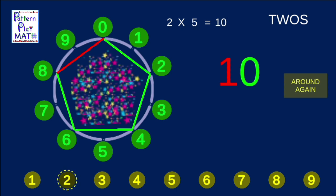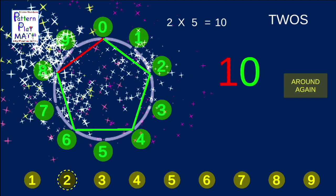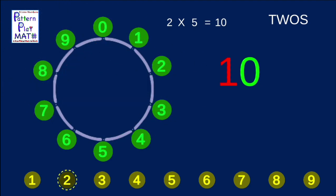2, 4, 6, 8, who do you appreciate? But 0 is now 10, of course, and the big numbers on the side show 10. Let's press the Around Again button.